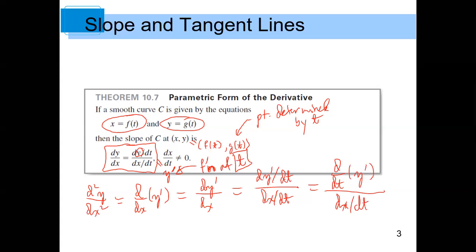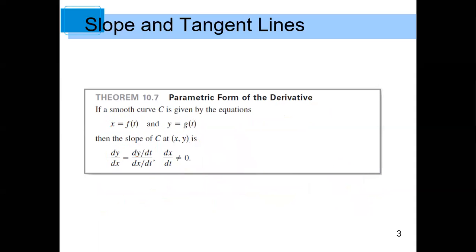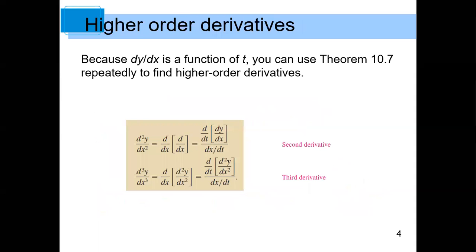I did one in the videos, but I'll do the same thing again. So there's a little typo — there should be a y right there. This is saying: take the derivative with respect to t of y prime, divided by dx/dt. And you can keep going from there. If you want the third derivative, take the derivative with respect to t of y double prime and divide by dx/dt again. The general pattern: you take the derivative of the y part with respect to t and divide by dx/dt.